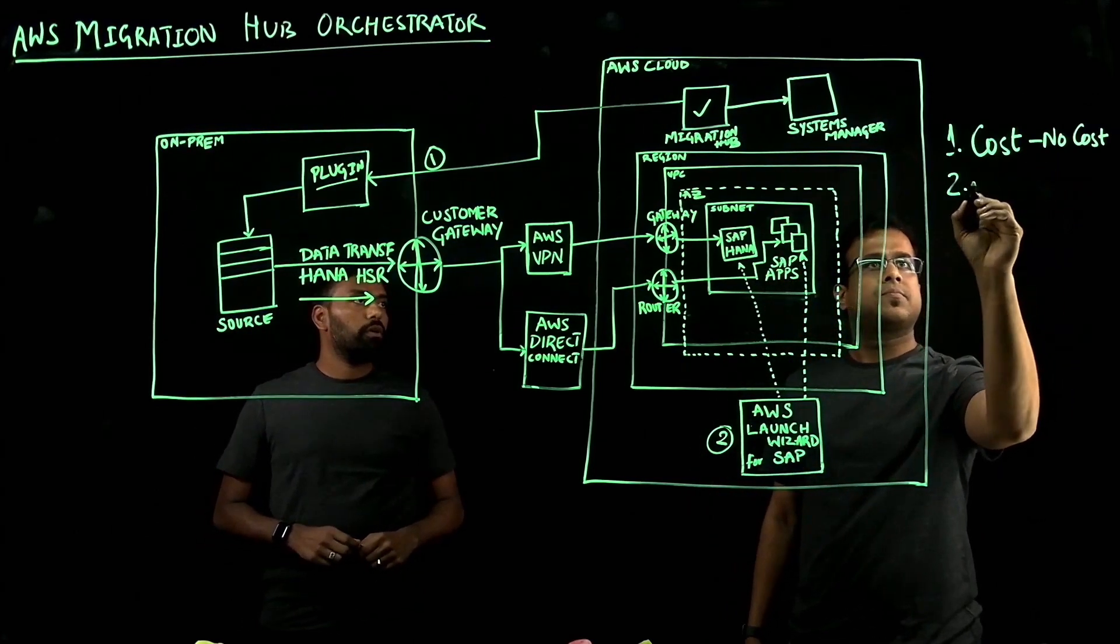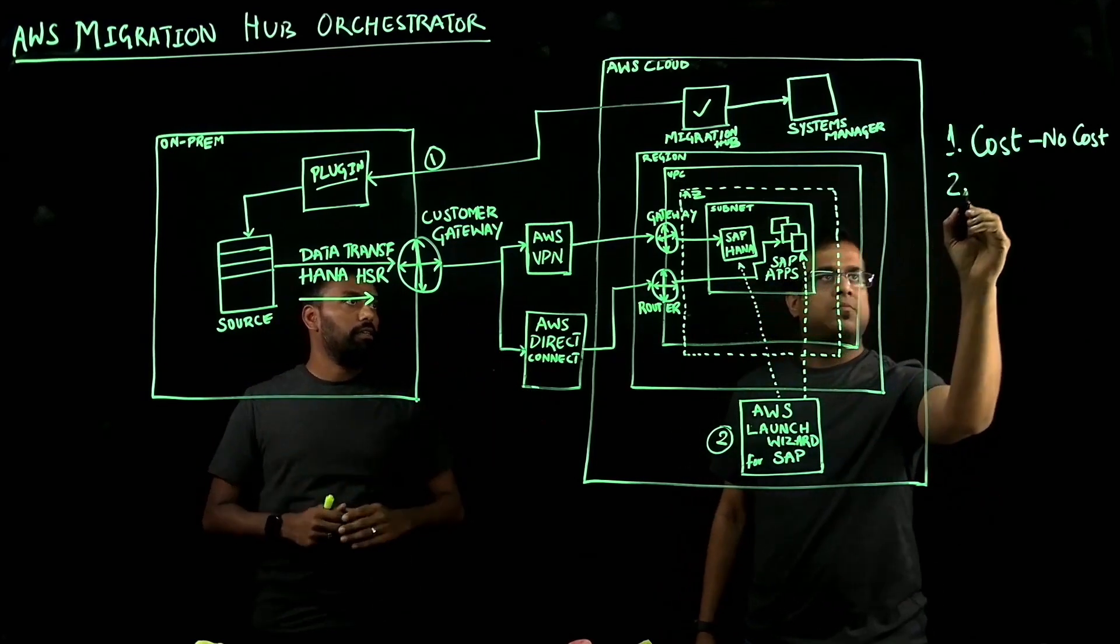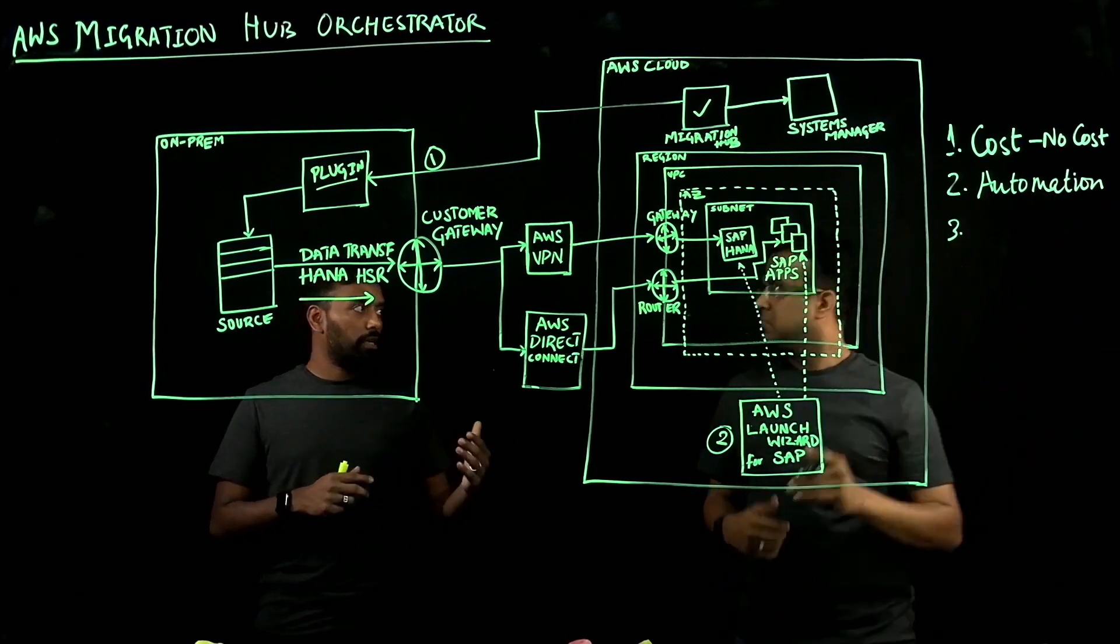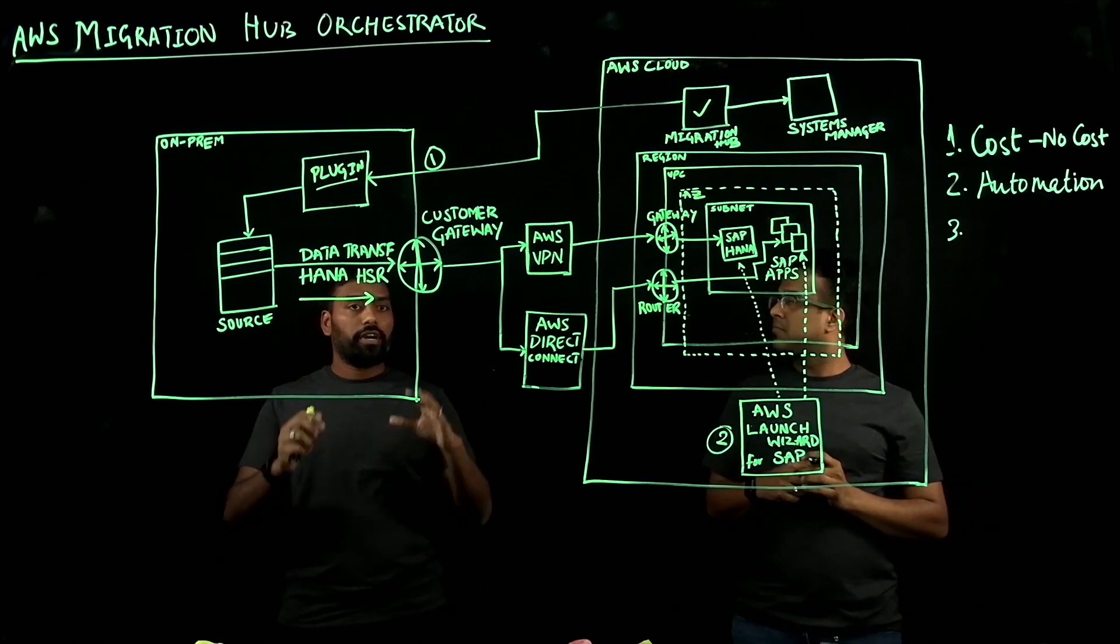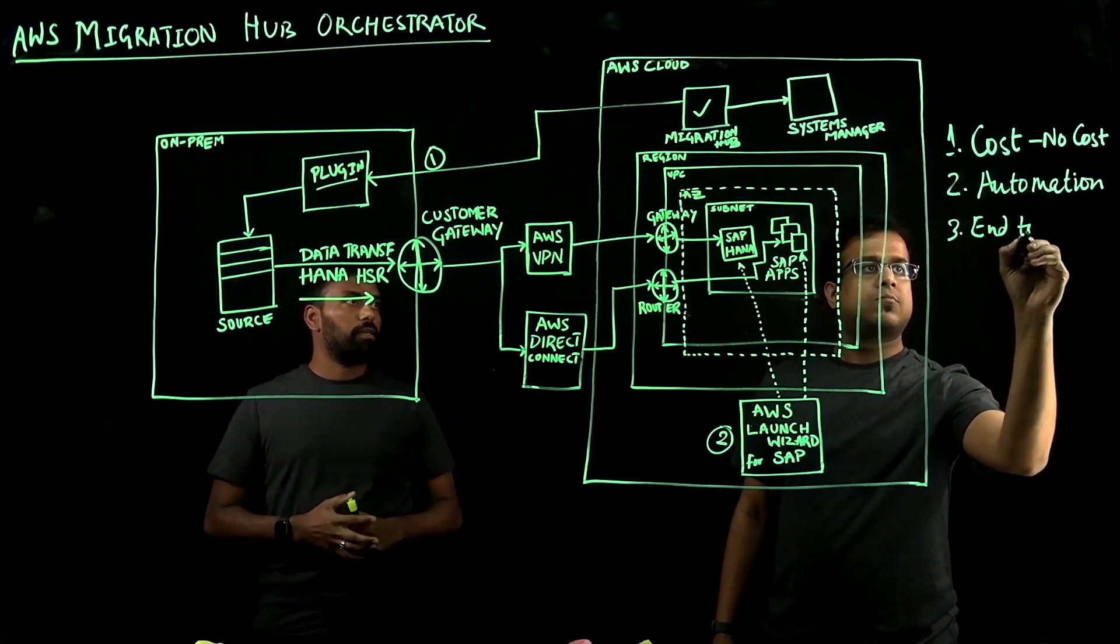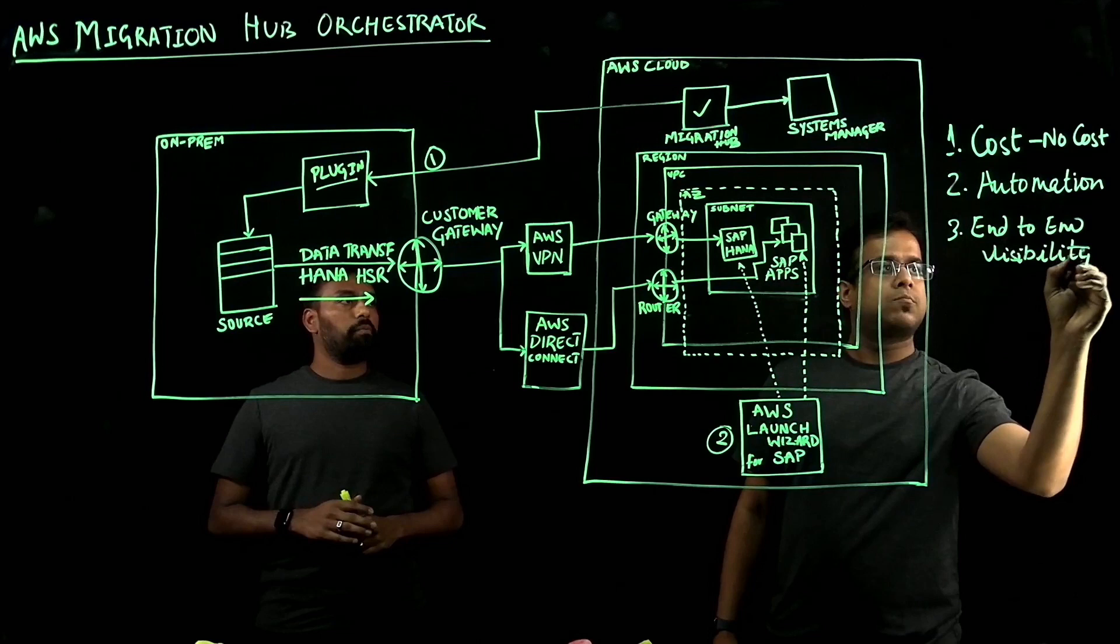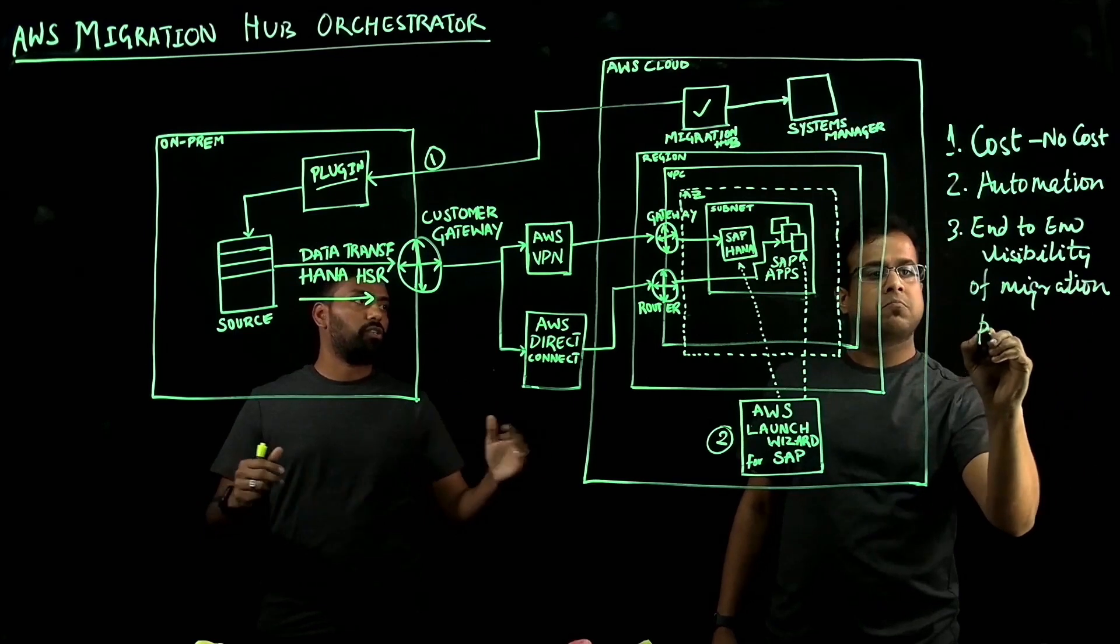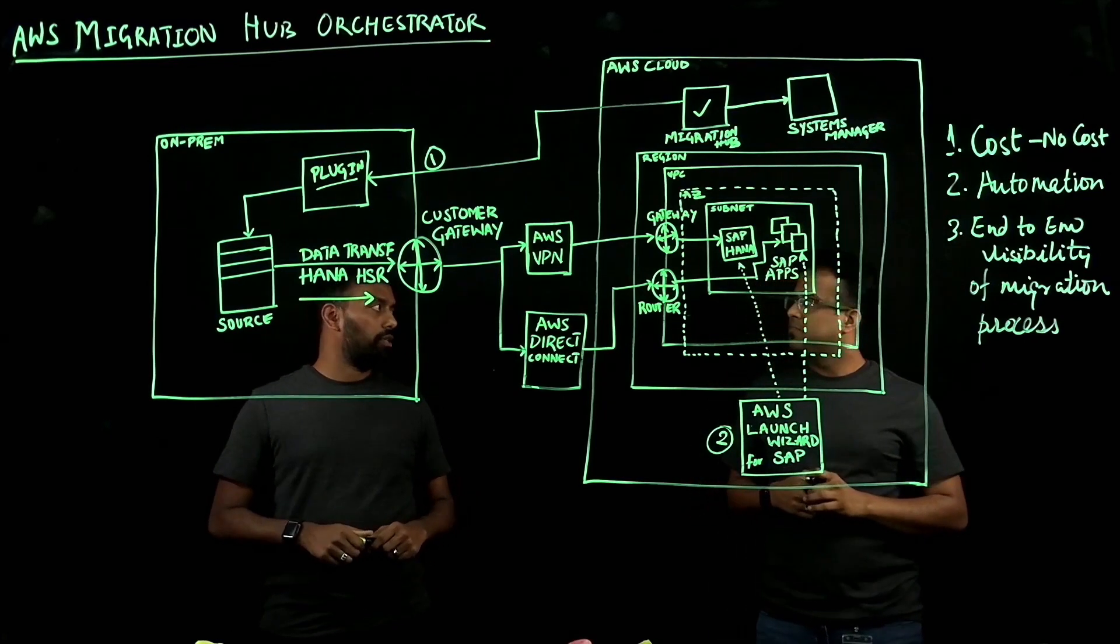And number two, you have reduced timelines for your implementation because you're automating this entire activity. That basically minimizes your manual tasks and eliminates manual activities. And number three, it gives you great visibility. For example, your management wants to know what is happening with your migration process because these are mission critical applications. It gives you capability to have end-to-end visibility and tracking your entire migration process in one space, in one page. These are the three advantages of Migration Hub Orchestrator at a high level.